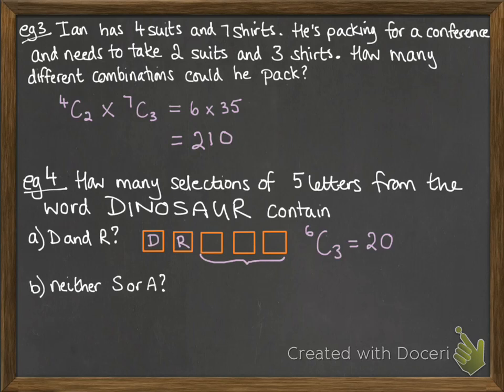And selections that don't contain S or A. If we think about that word, we just take out S and A. They're not possible options for us to pick. So from the six remaining letters, we need to pick five of them. There are six ways to do that.